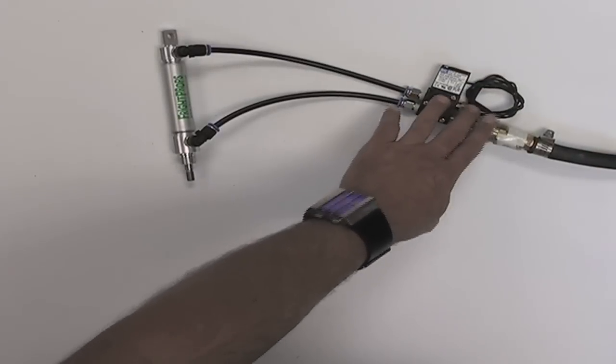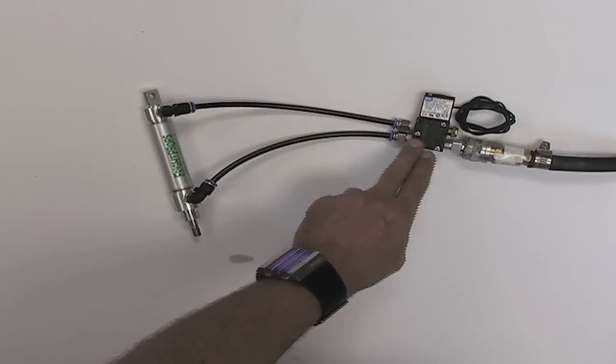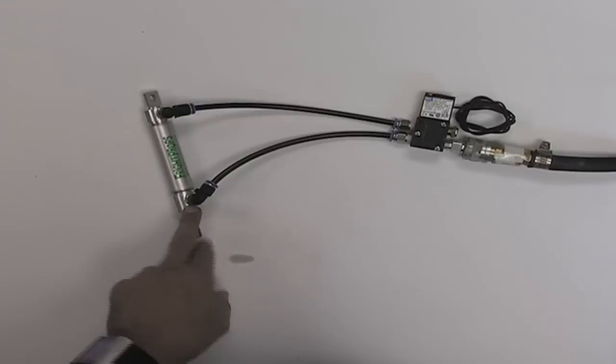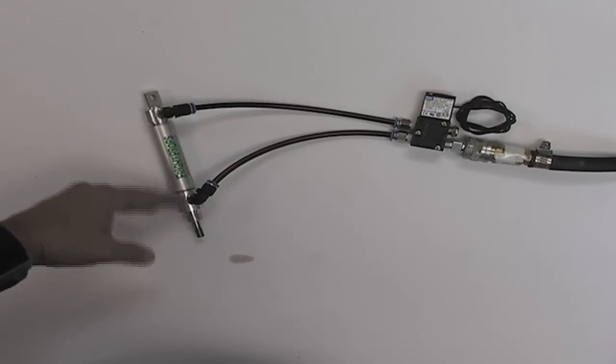When the solenoid is not plugged in, it pushes air from the compressor out the port and into the top of the cylinder, which pushes the shaft back.